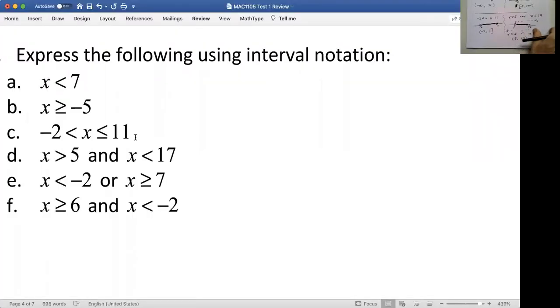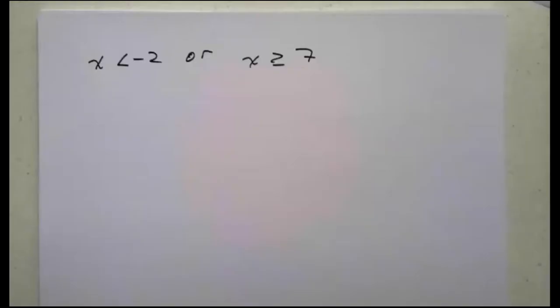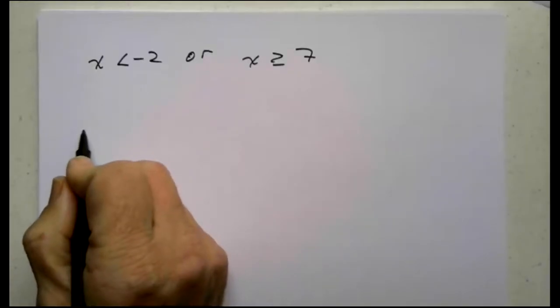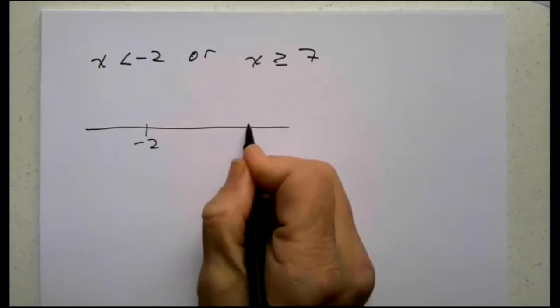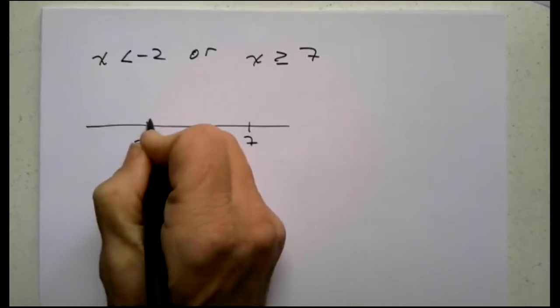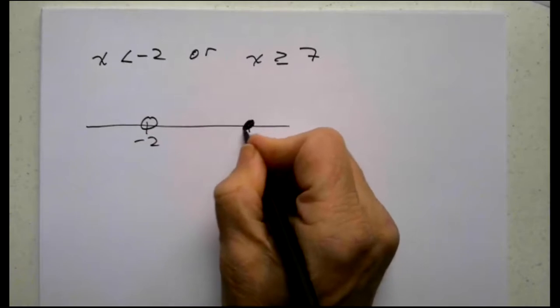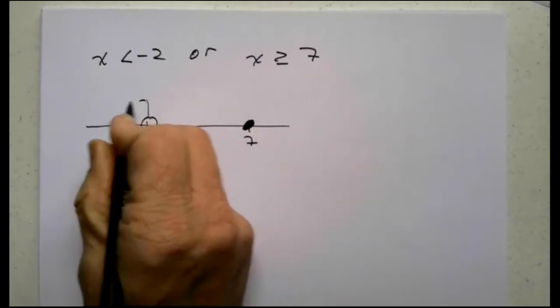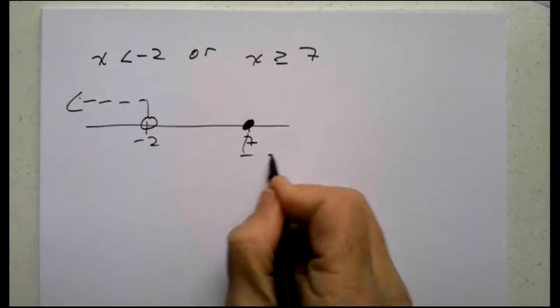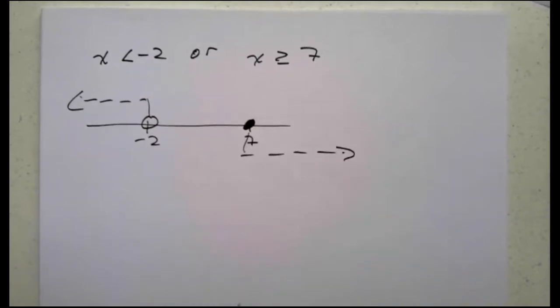Next one is or, x is less than negative 2 or x is greater than or equal to 7. So let's think about that one. x is less than negative 2 or x is greater than or equal to 7. So I like to use my dotted line things. Again, negative 2 is to the left, 7 is to the right, less than, open circle, greater equal, solid, less than headed this way, greater than headed that way. Or.